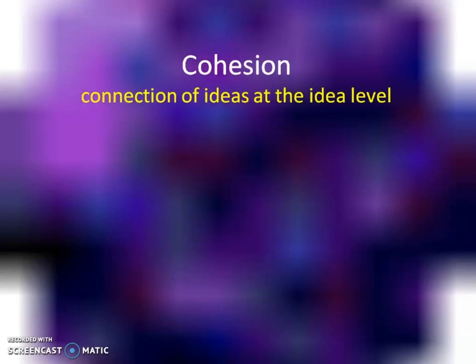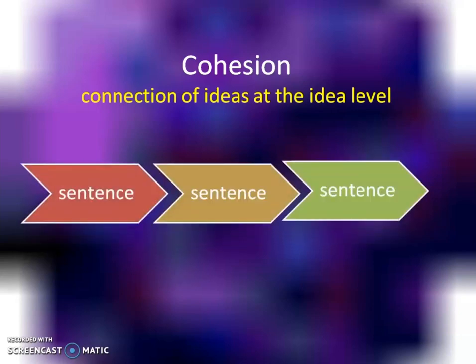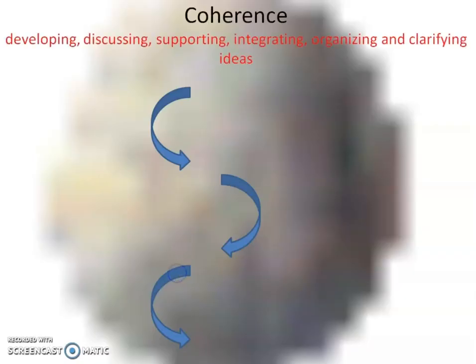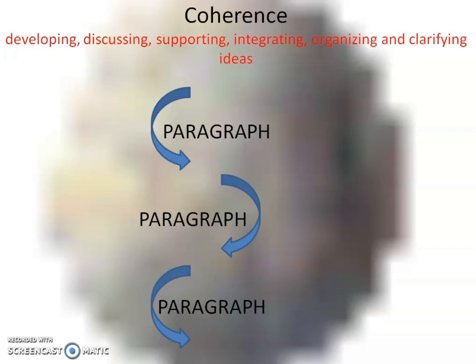Cohesion is the connection of ideas at the sentence level. When you are writing sentences, they should follow a sequence — one sentence should connect to the next, and the next sentence should connect to the one following it. Coherence, on the other hand, applies at the paragraph level — when you develop paragraphs, they should be integrated and organized so that a clear picture comes to the mind of the reader. Together, cohesion and coherence give you a larger picture that is clear, precise, and very explorable for anyone reading your research proposal.